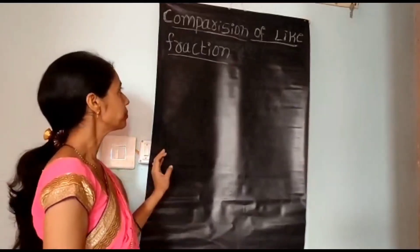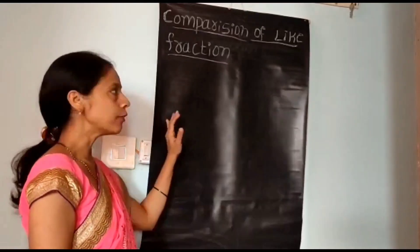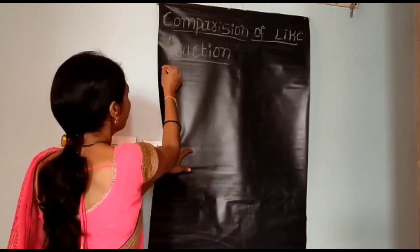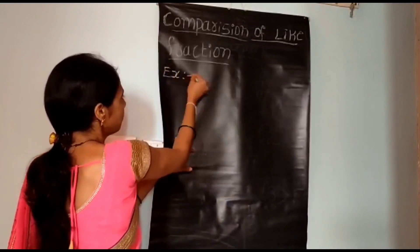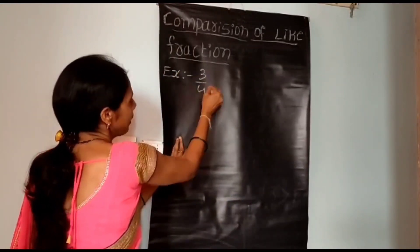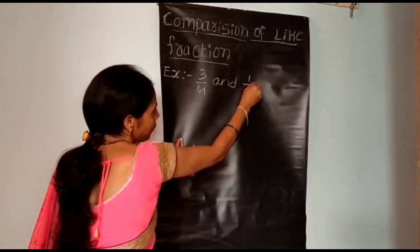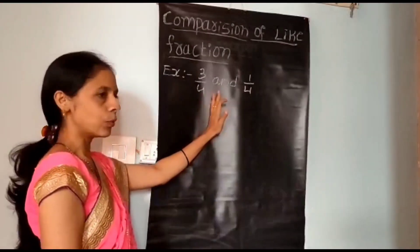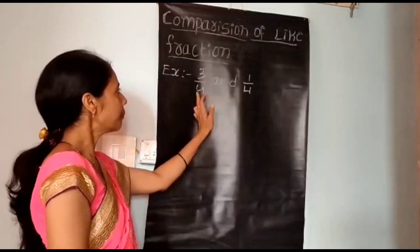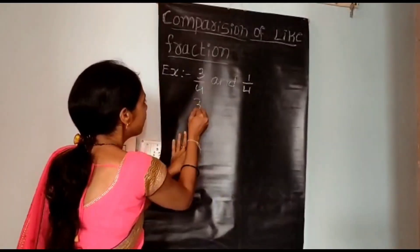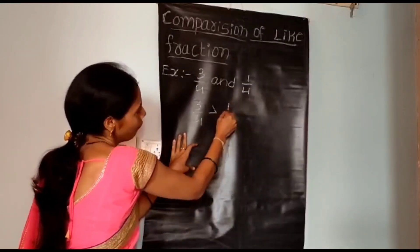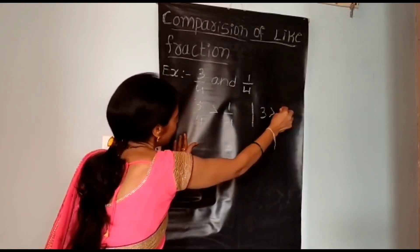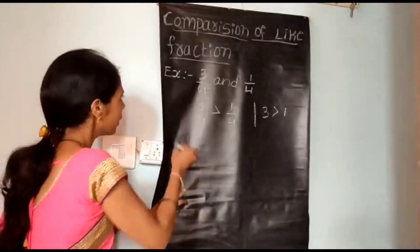In this video, we study comparison of like fractions. Take an example: 3/4 and 1/4 are two like fractions because their denominators are the same. Comparing these two, 3/4 is greater than 1/4 because 3 is greater than 1.